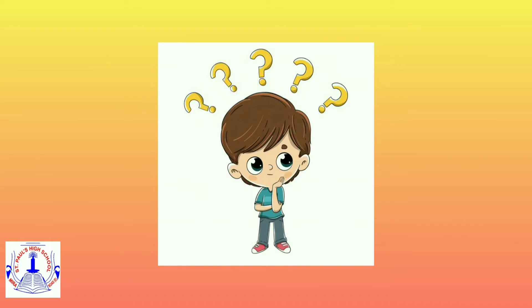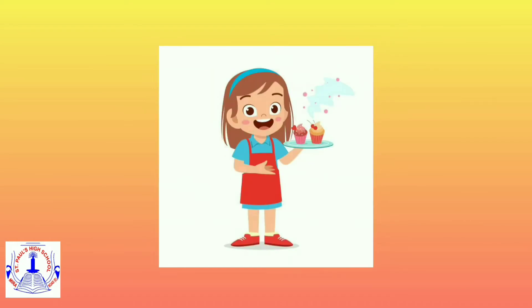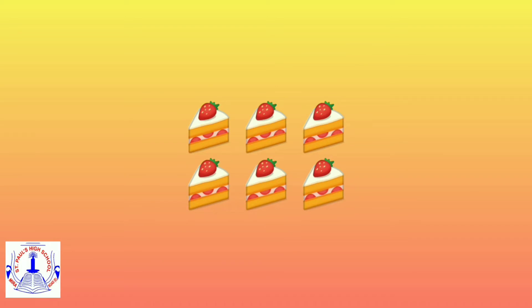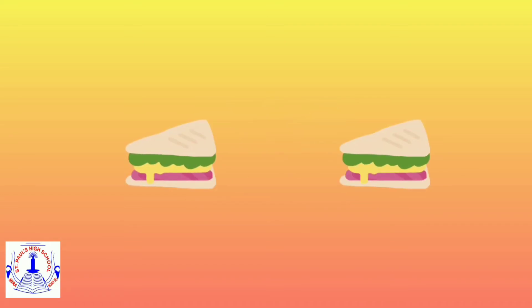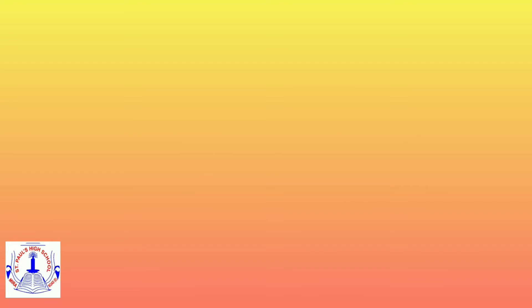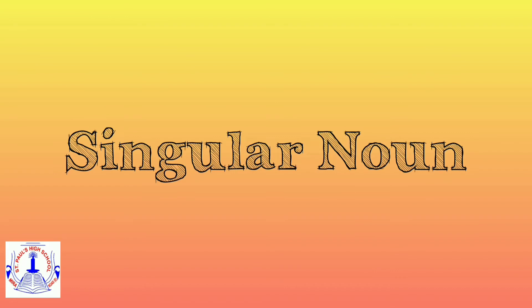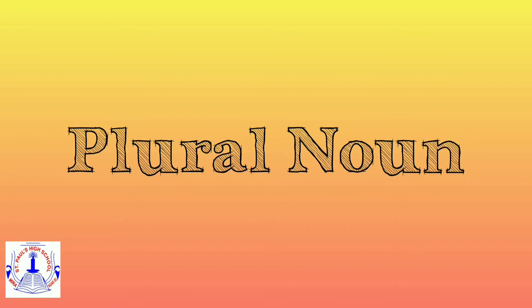But you are speaking as if there is only one of each item. What do you mean? What are these, Sunny? Well, it's cake. And how many can you see? I can see six cake. What about these? Sandwich. No, Sunny, you are using singular nouns for all the food items instead of plural nouns.